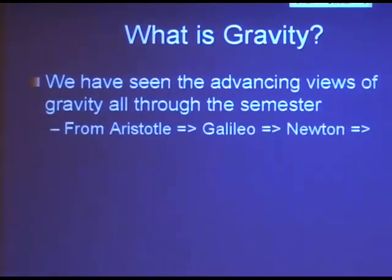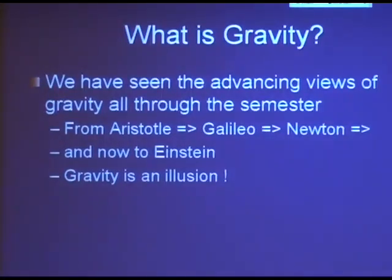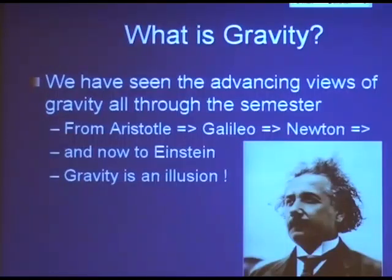We've seen the advancing views all semester from Aristotle to Galileo to Newton, and now we're going to go to Einstein. And here's the big surprise: that's Einstein's conclusion. Gravity is an illusion. There is no such thing as gravity for Einstein, and I'll try to explain how he reached this conclusion. It's an amazing conclusion.